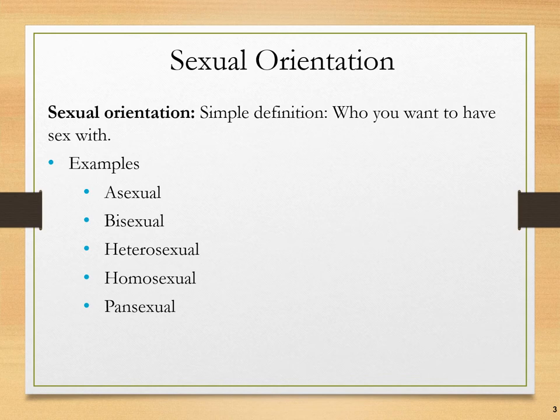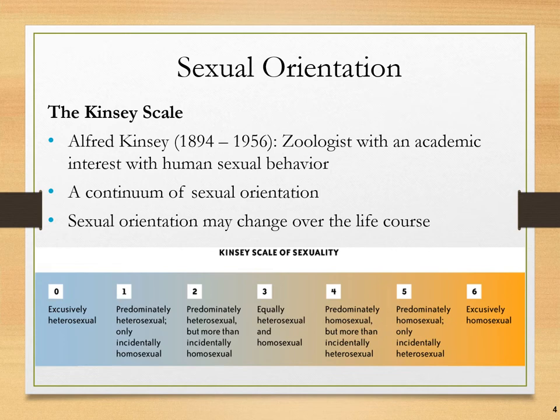Examples of sexual orientation are asexual, bisexual, heterosexual, homosexual, and pansexual. We'll work through most of those over the course of this lecture.